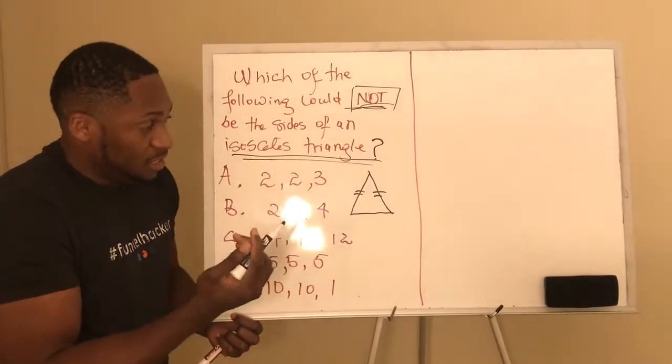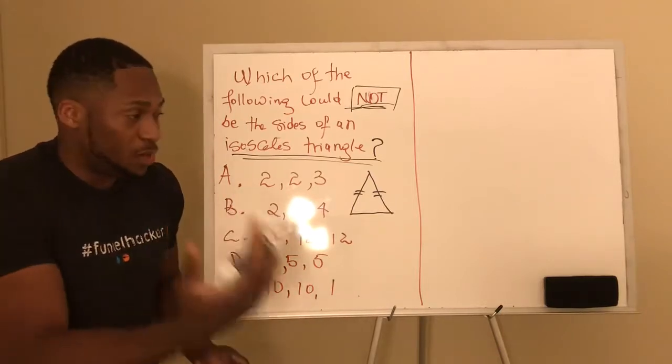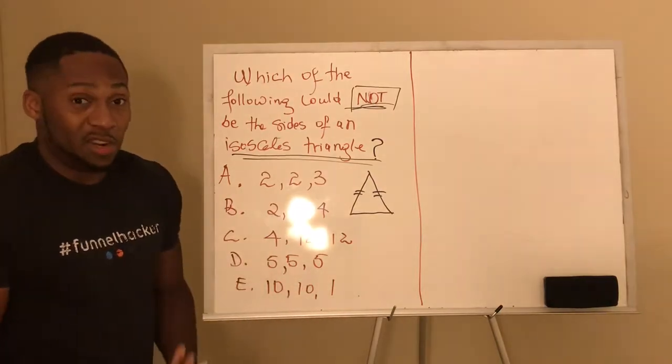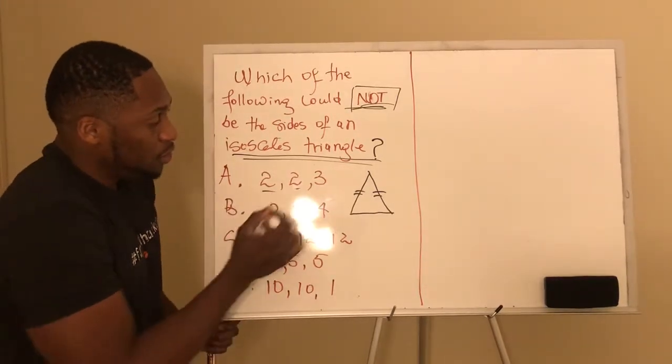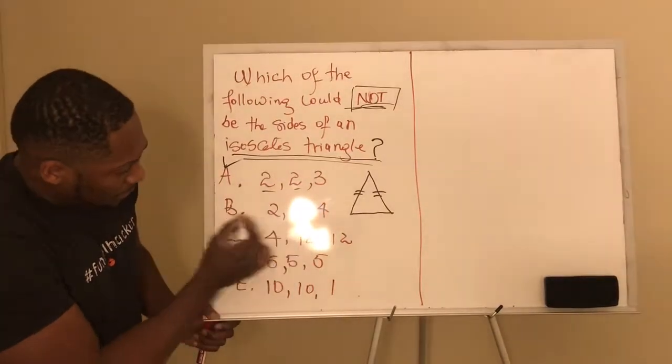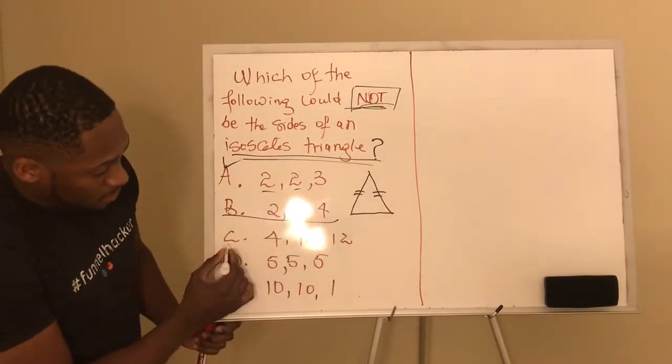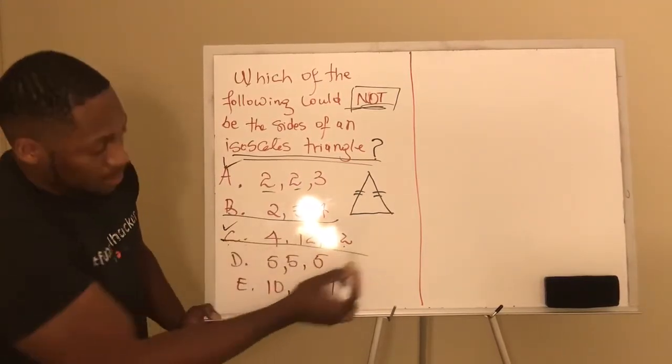The definition again is an isosceles triangle is a triangle that has at least two sides that are equal to each other. So this one, two and two, this satisfies it. Let's come back to this. This one, twelve and twelve, this satisfies it. That's good.